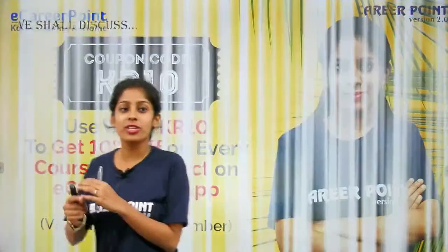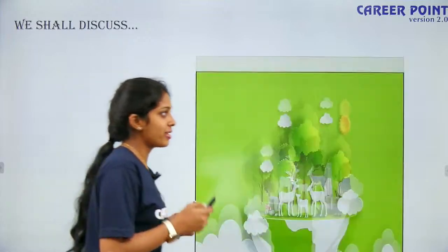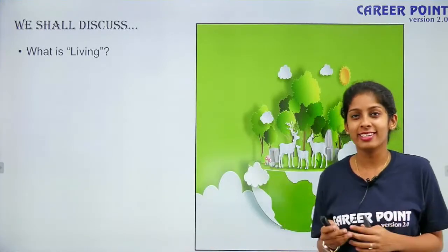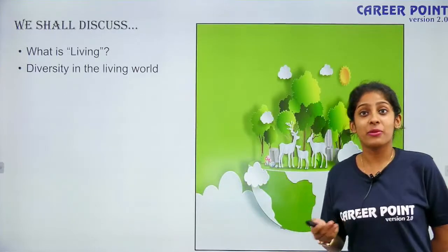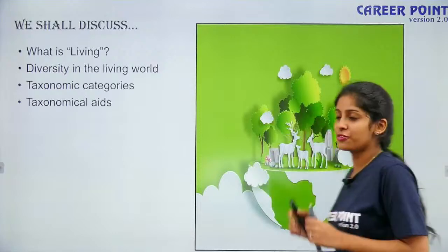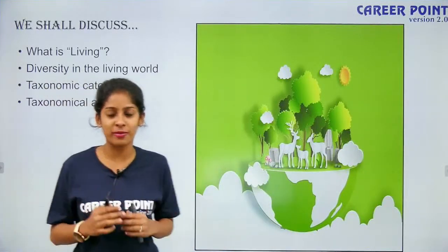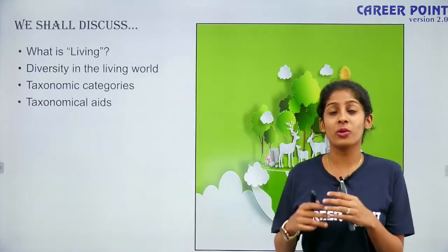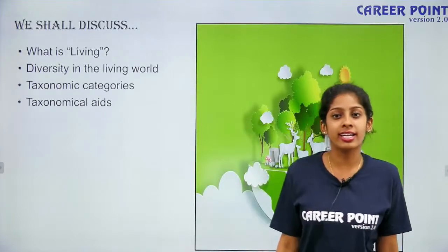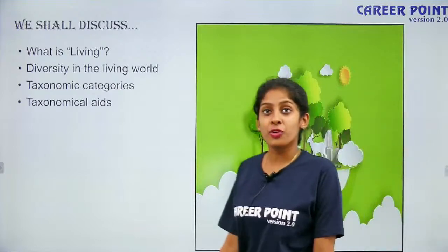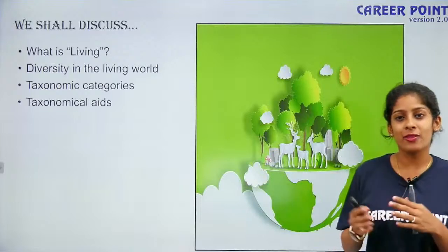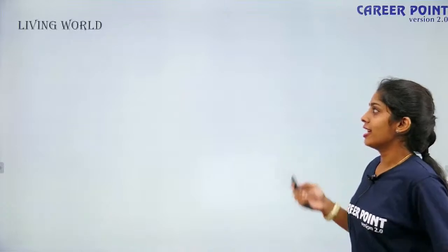Going forward, today's agenda for Living World covers: first, what is living — we are going to define it; then diversity in living organisms; taxonomic categories; and taxonomical aids. It's a pretty short chapter, not much to remember. It's basically a self-study chapter — if you're very good at focusing, just 15 minutes is enough, and the weightage is pretty less. This is your first chapter in class 11.